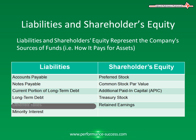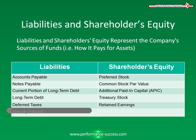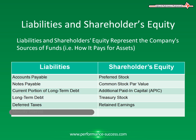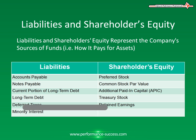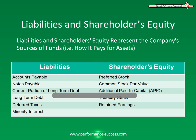Deferred Taxes: This is the potential future tax obligations arising when taxes payable to the IRS are lower than those recorded on financial statements. And the last liability is Minority Interest: This is equity interest in the portion of the consolidated businesses that the company does not own.